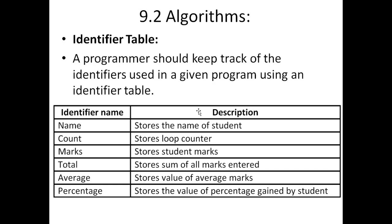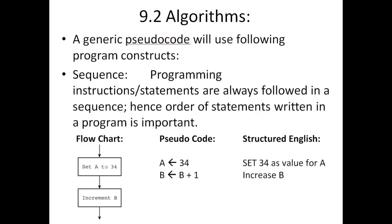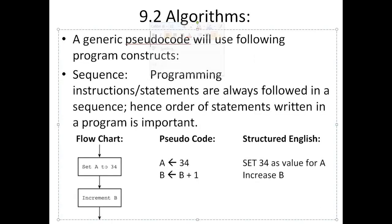The examiner usually gives you a program or scenario and a blank identifier table to fill in. For example: 'name' stores the name of a student; 'count' stores the loop counter; 'marks' stores student marks; 'total' stores the sum of all marks entered; 'average' stores the value of average marks; 'percentage' stores the value of the percentage gained by a student.